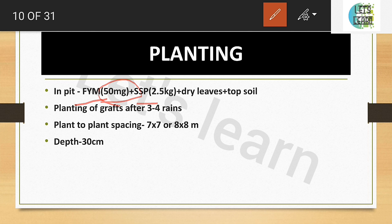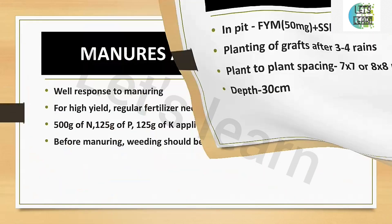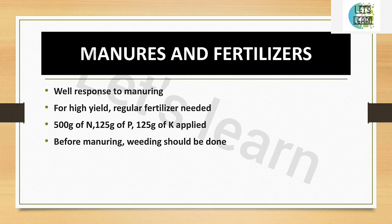To summarise pit preparation: FYM 15 kg, SSP (single super phosphate) 2.5 kg, dry leaf, and topsoil should be applied, and the seedling planted inside. Planting is done after three or four rains. Spacing of 7×7 or 8×8 metres is recommended, with a pit depth of about 30 cm for deep root penetration and proper growth.